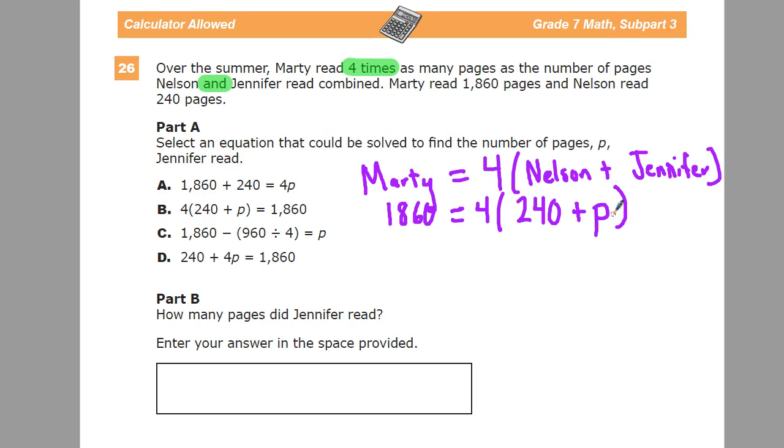One of the things that when I taught at the high school level, for some reason people couldn't get past, is that an equal statement or an equation is defined by an equal sign with the same relative value on each side, which means it doesn't matter what order that they're in as long as they're on the same side of the equal sign when you start as when you finish. So I can flip these around all I want. I can flip 1860 over here and then four times 240 plus p right here. And the reason I would do that is because it's one of the answer choices.